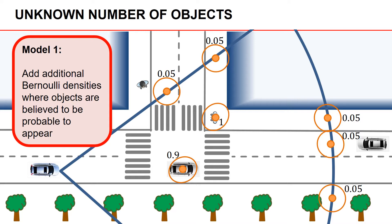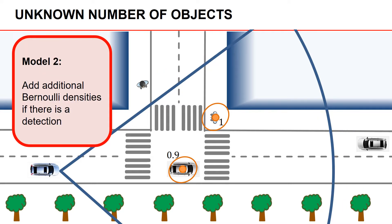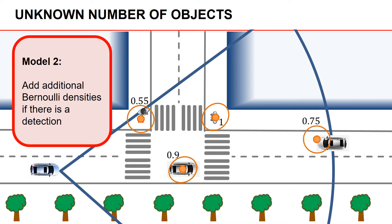Tracking filters based on this method are called multi-Bernoulli mixture filters. The second method for handling new objects is to only add new Bernoullis if there is a detection indicating that a new object could have appeared. For example, if a pedestrian and vehicle enter the field of view and both are detected — illustrated here by red squares — we add new Bernoullis, one for each measurement. Because we have a detection, we can often be more certain about the new objects; the probabilities of existence in this example are 0.55 and 0.75. Tracking filters based on this measurement-driven method are called Poisson Multi-Bernoulli Mixture filters.